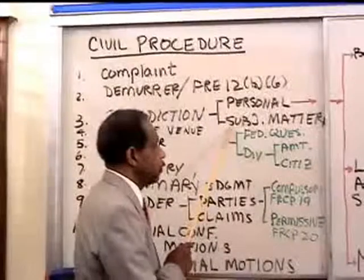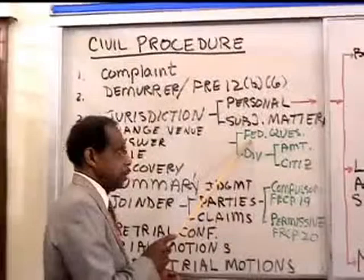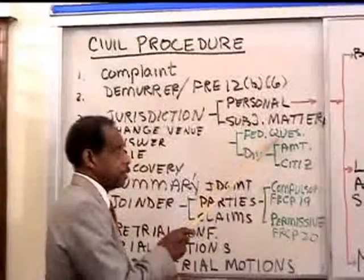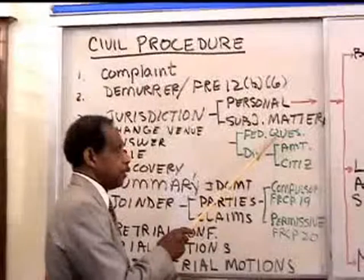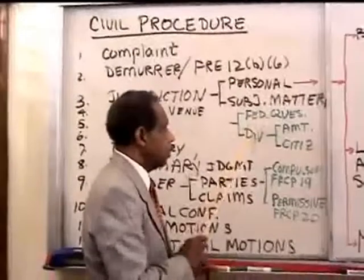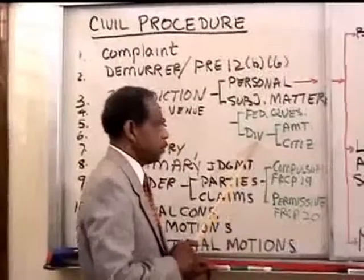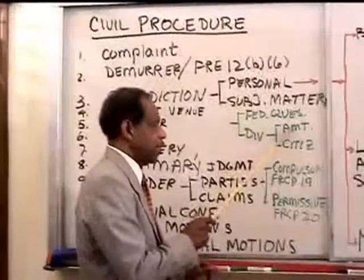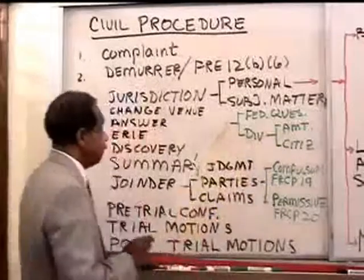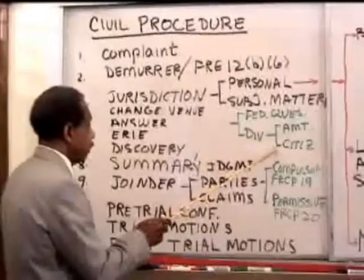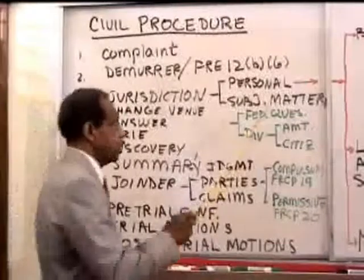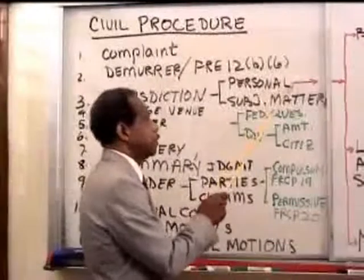Subject matter jurisdiction in federal court can be either a federal question — people are disputing regarding some federal law or a treaty — or based on diversity of citizenship with the proper amount in controversy and sufficient diversity. We want to look at this material more closely. Some of this other material will come up in today's lecture as it comes up. Let's begin with the question of personal jurisdiction: what is required for a court to exercise jurisdiction over a person and have that be an enforceable, binding decision.